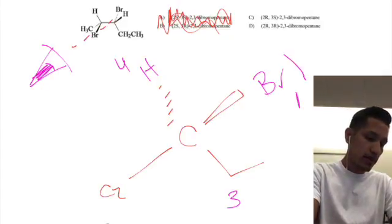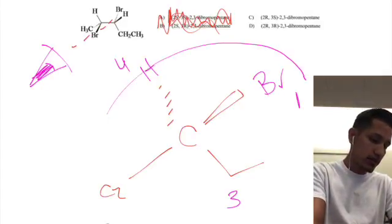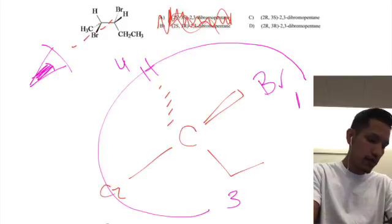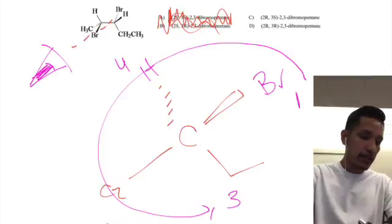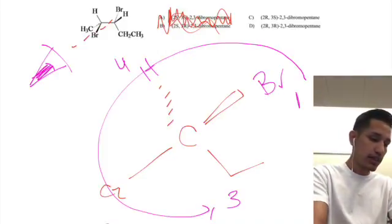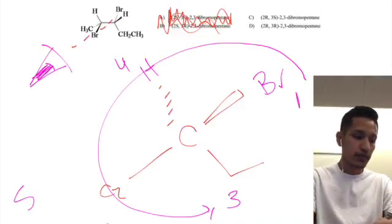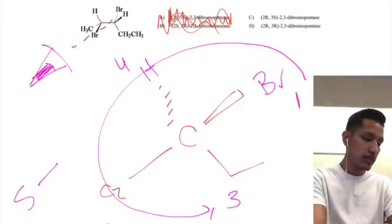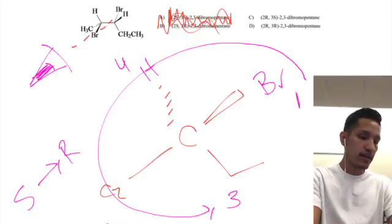So now we're going to do our clock trick: one, two, three — that is going counterclockwise, so that would be S. And then since we did a reversal of the fourth priority, that's going to make that R.